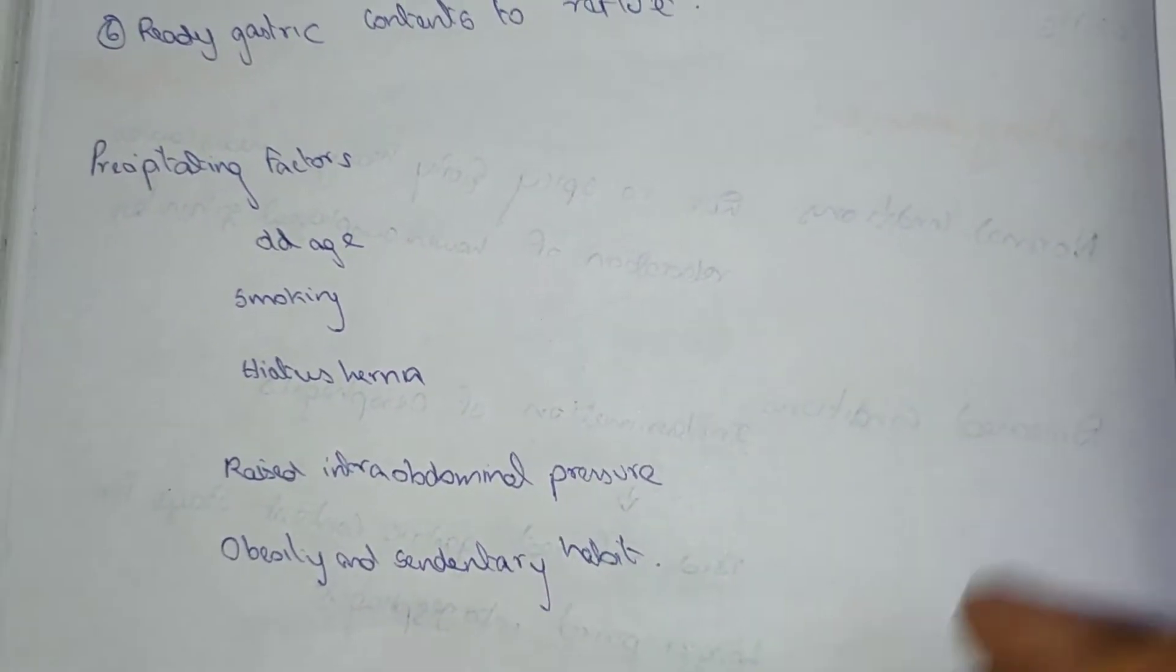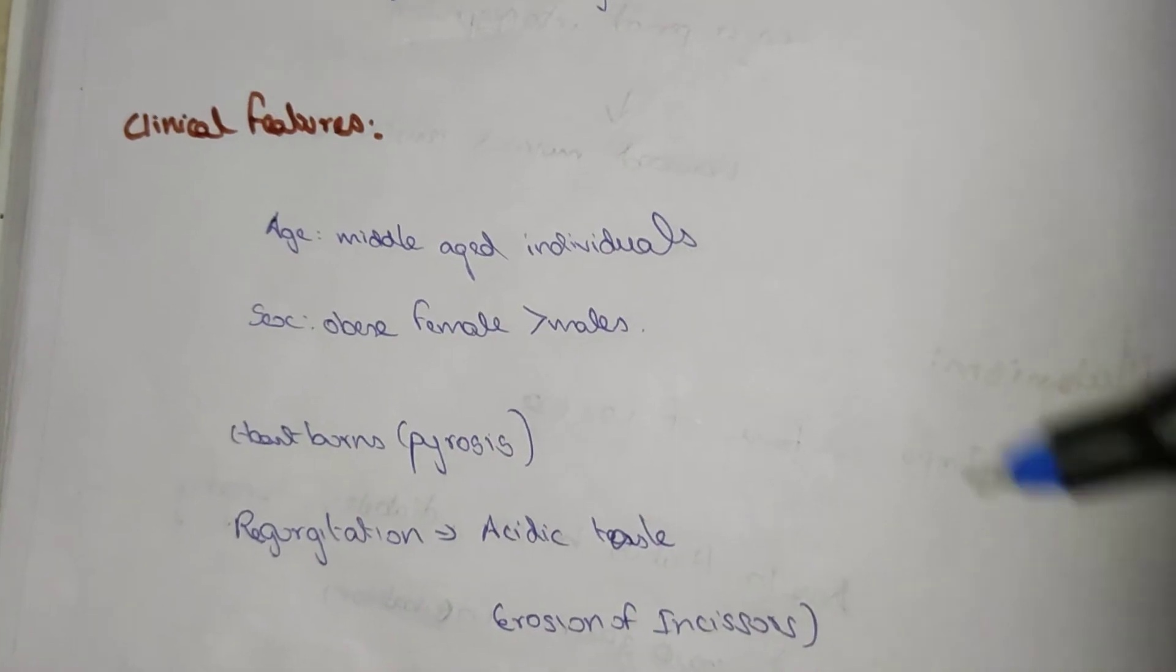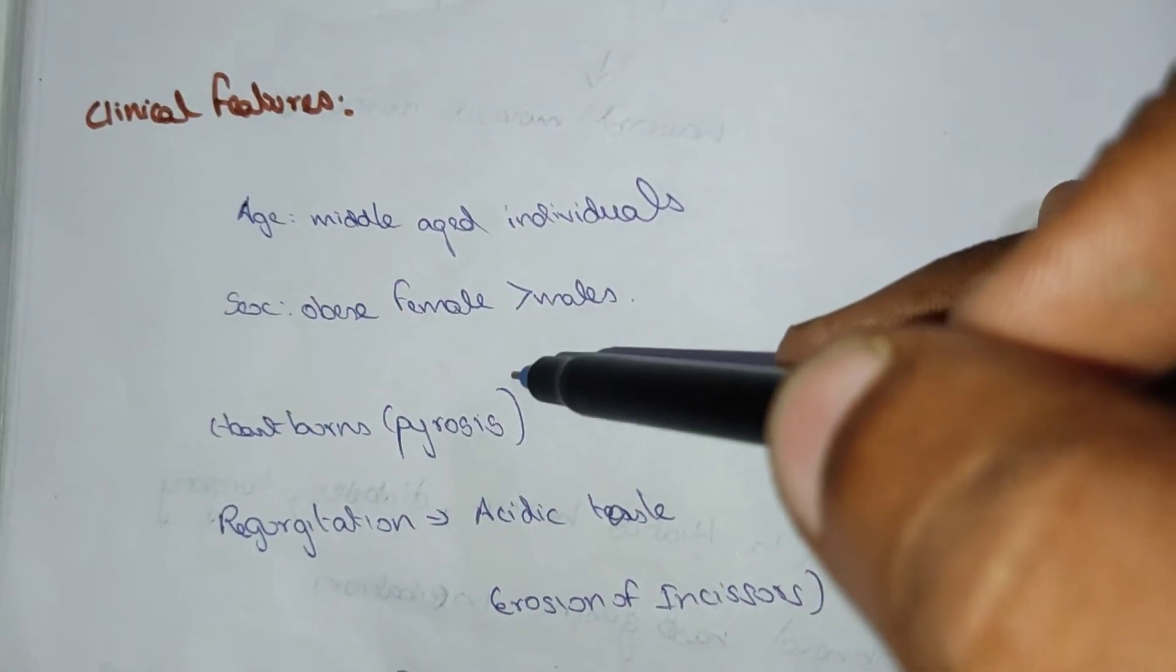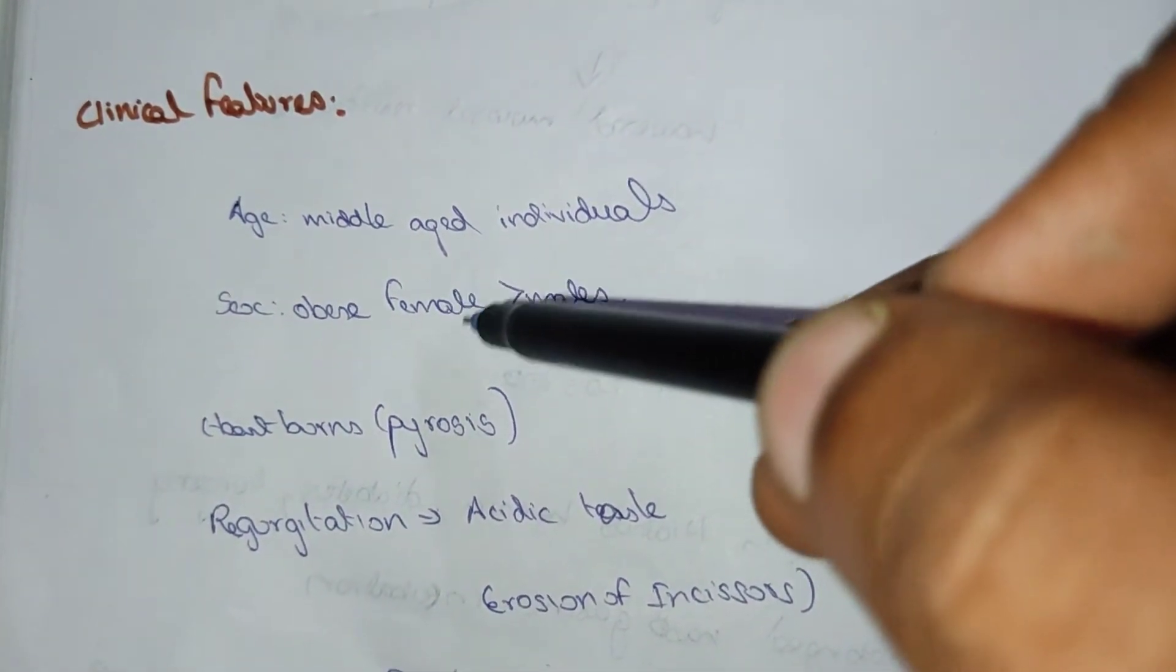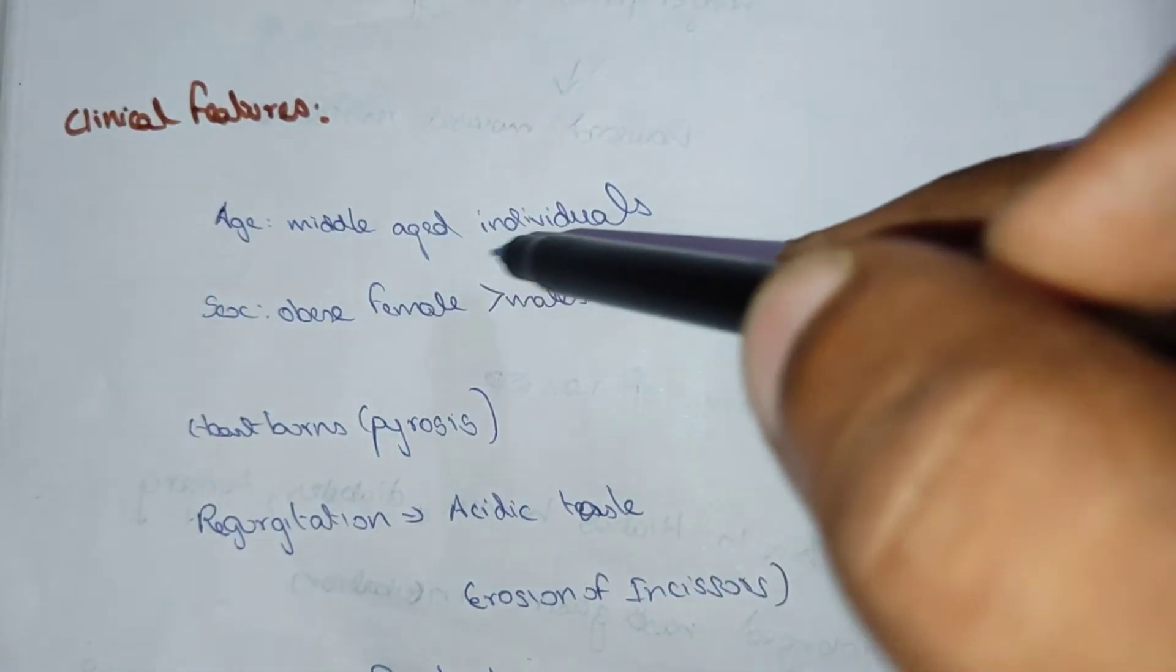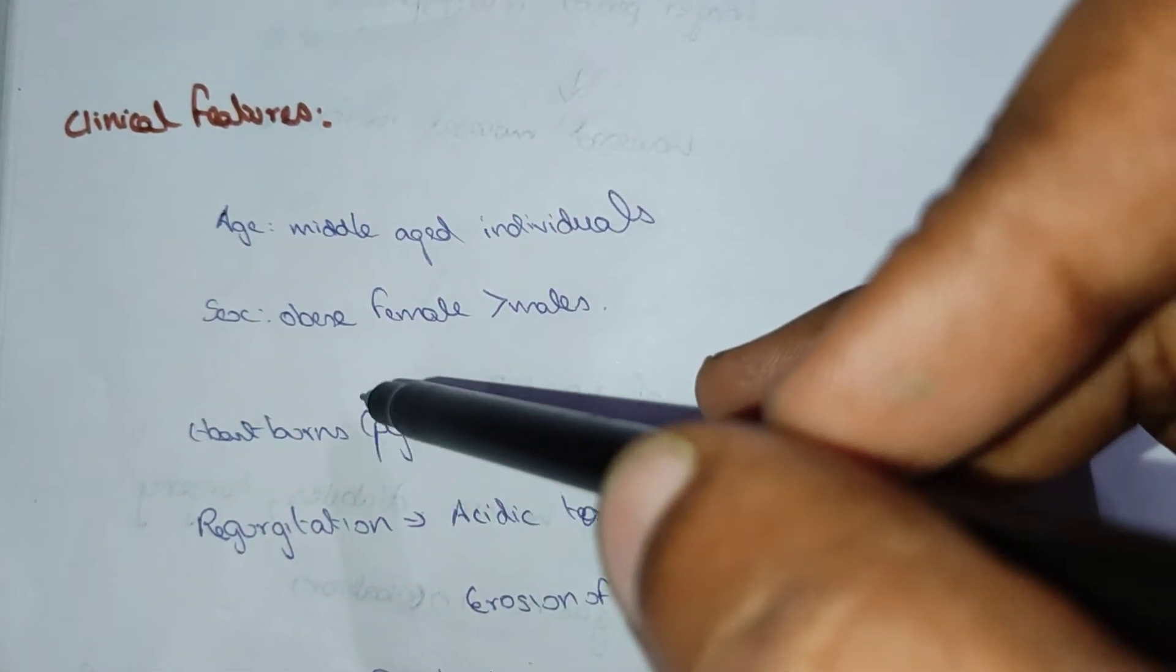Now we will see the clinical features. Age: like middle-aged individuals. Sex: obese females. As well, it happens mostly in females. Age is due to the middle-aged individuals. Now we will see the signs and symptoms.